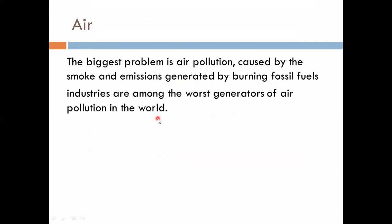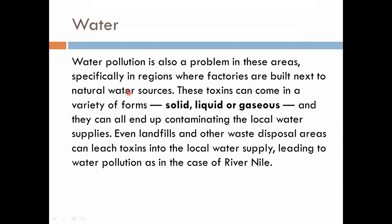Air pollution is caused by the toxins and waste released by factories. The toxins released from factories are in solid, liquid, or gaseous forms. These waste materials are easily disposed of into water or natural water resources, where they are deposited, which pollutes the water.